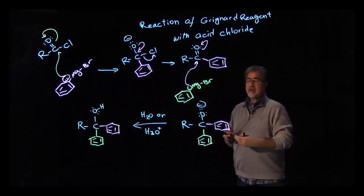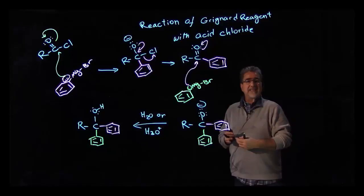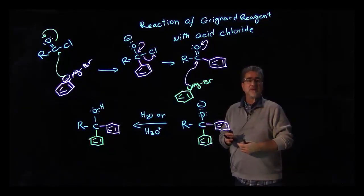So as we see, the Grignard reaction with the acid chloride would take two moles of Grignard. At the end, we are going to get di-substituted alcohol.